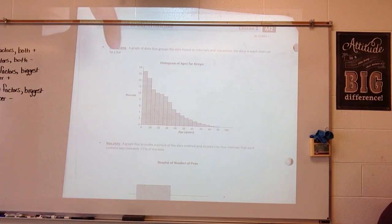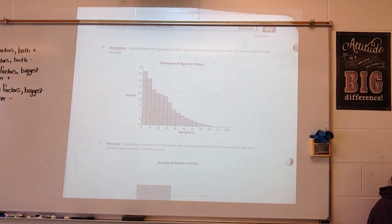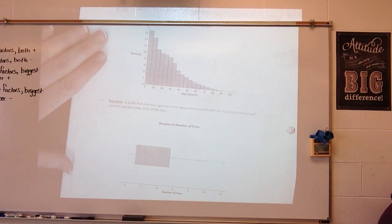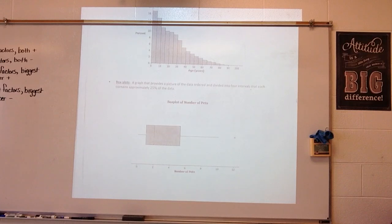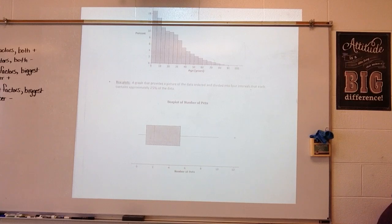Then we have what we call a histogram. A histogram is a graph of data that groups the data based on intervals and represents the data in each interval by a bar. For example, a histogram of ages for Kenya groups ages 0 to 5, 5 to 10, 10 to 15, and so on. Then we have a box plot — a graph that provides a picture of the data ordered and divided into 4 intervals that each contain approximately 25% of the data. Think of each graph as telling a story and as the starting point in understanding the variability in the data.